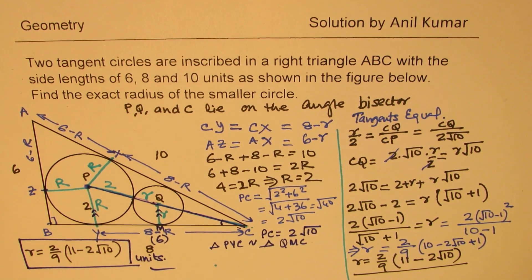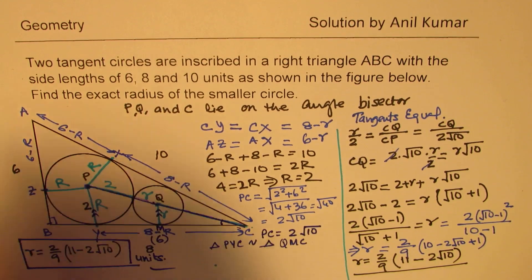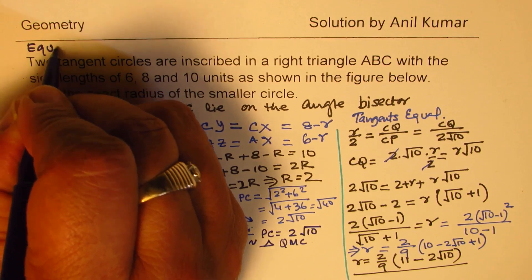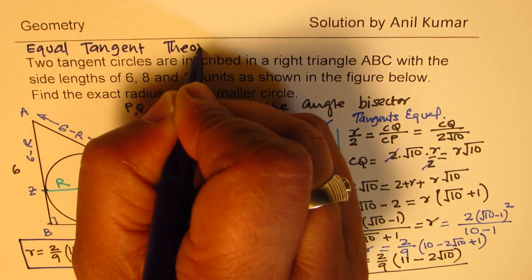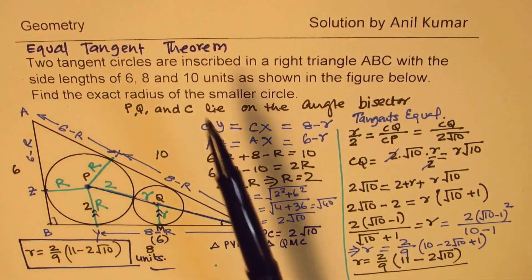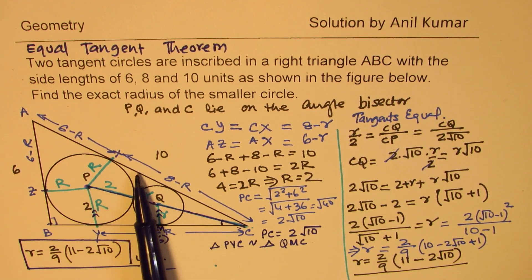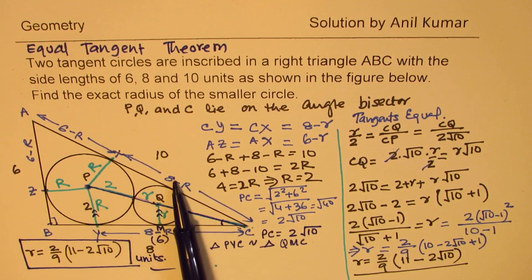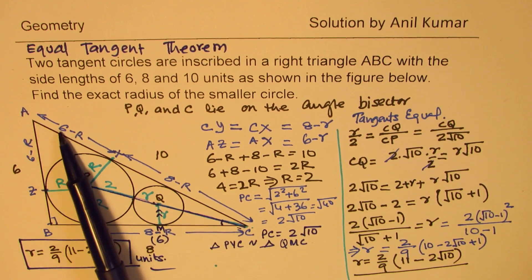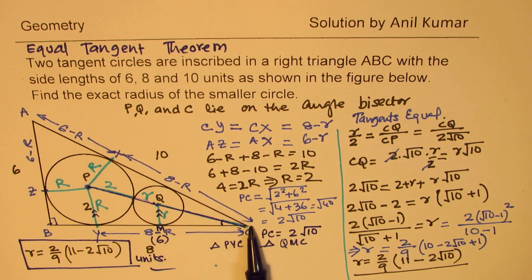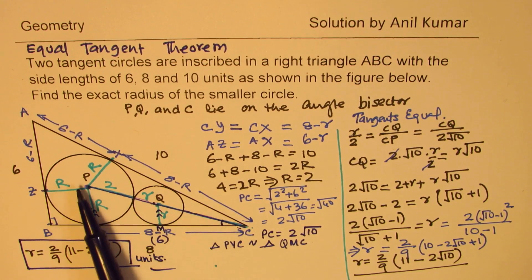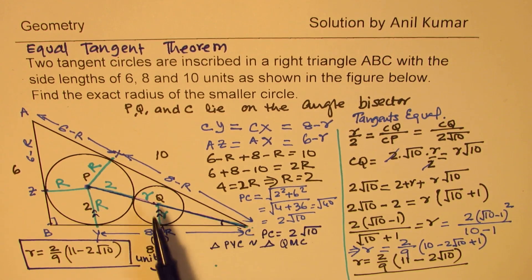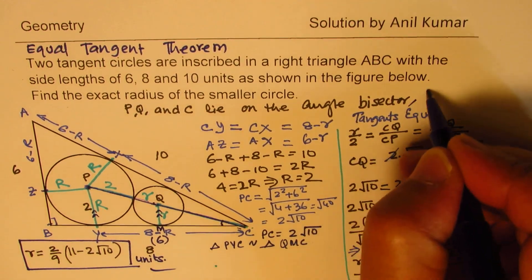The important theorem which works here is the equal tangent theorem. Because of it, we decided the sides are 8 minus R and 6 minus R. Since the total length is 10, we found R equals 2. Then we used a similar triangle relationship along the angle bisector of angle C, where both centers lie.